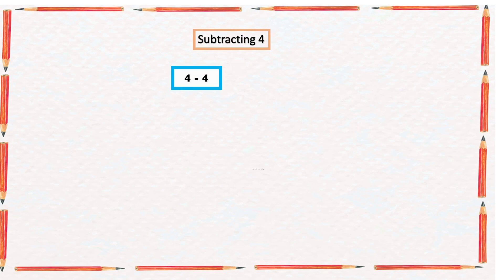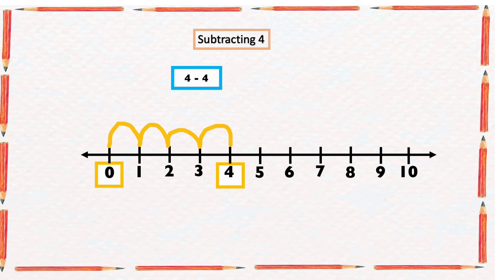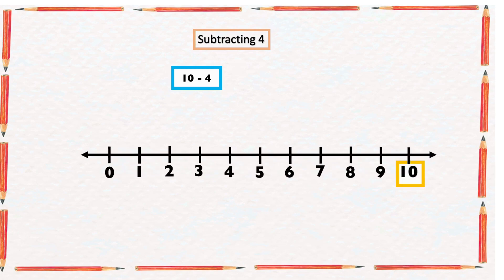Four minus four: with our number line we're going to start from number four and count four numbers backward: one, two, three, four. Our arrow ended at zero, so four minus four is equal to zero.